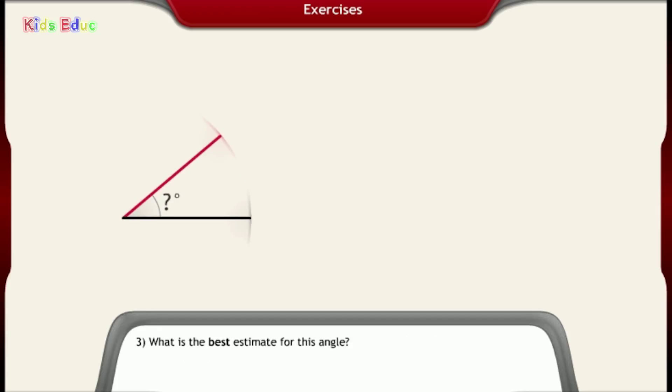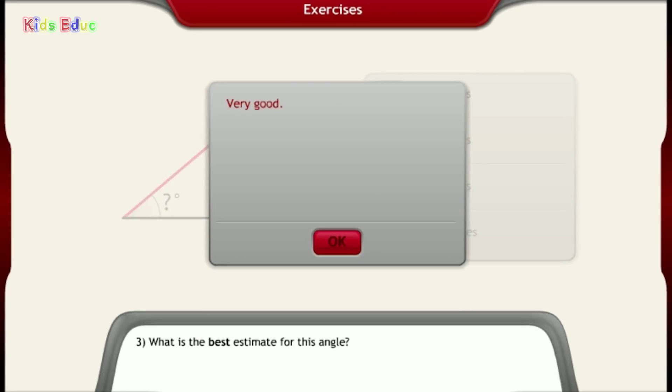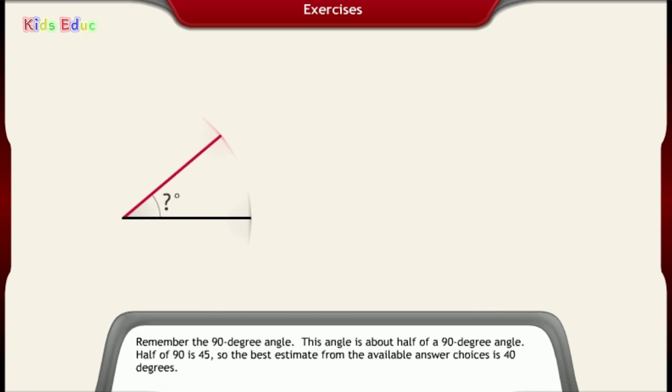Number 3, what is the best estimate for this angle? 40 degrees, 75 degrees, 90 degrees, 120 degrees. 40 degrees. Very good. Remember the 90 degree angle. This angle is about half of the 90 degree angle. Half of 90 is 45, so the best estimate from the available answer choices is 40 degrees.